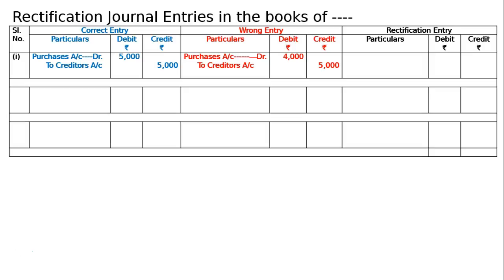To creditors account, the correct amount is there — 5000. Hence to rectify this, Purchase account has to be written down in the debit. Because Purchase account is debit, Purchase account is debited 1000. Hence, Purchase account debited 1000 to suspense account 1000. Now it is rectified.